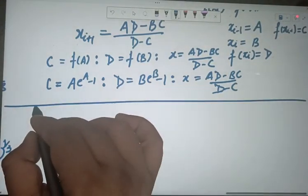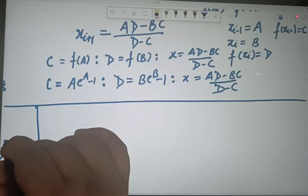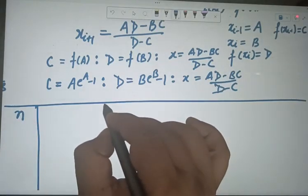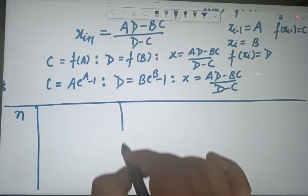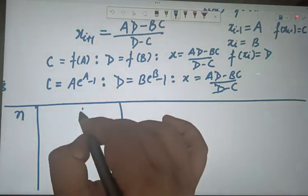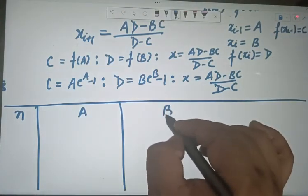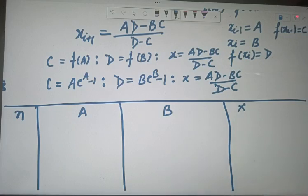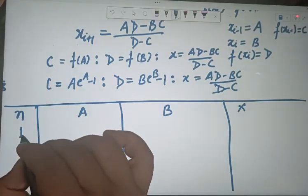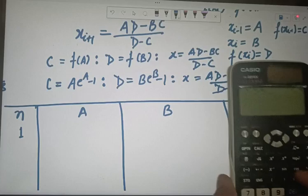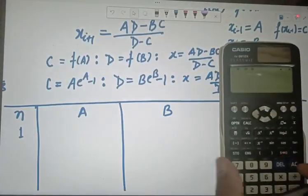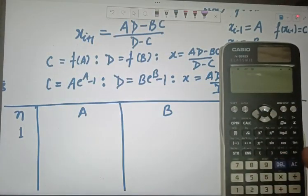Now let's set up the table. The columns will be: iteration number, value of a, value of b, and value of x. Come on, in the first iteration, let me type the function into the calculator.